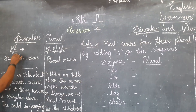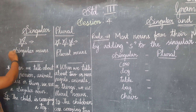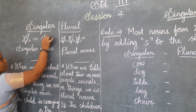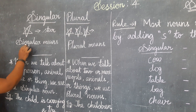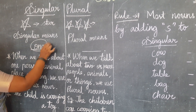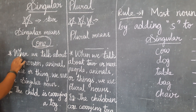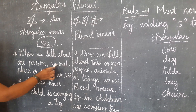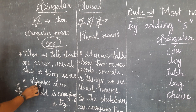See the picture here. What is this? This is your star. Singular means one. When we talk about one person, animal, place or thing, we use a singular noun.